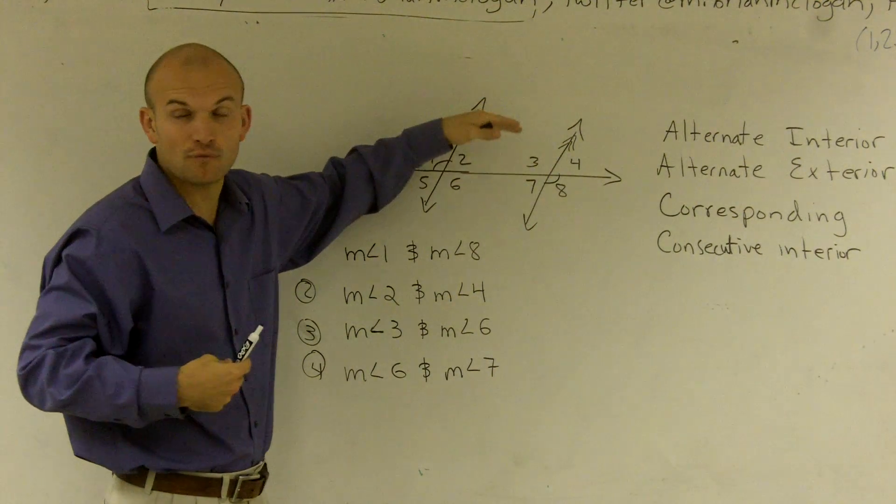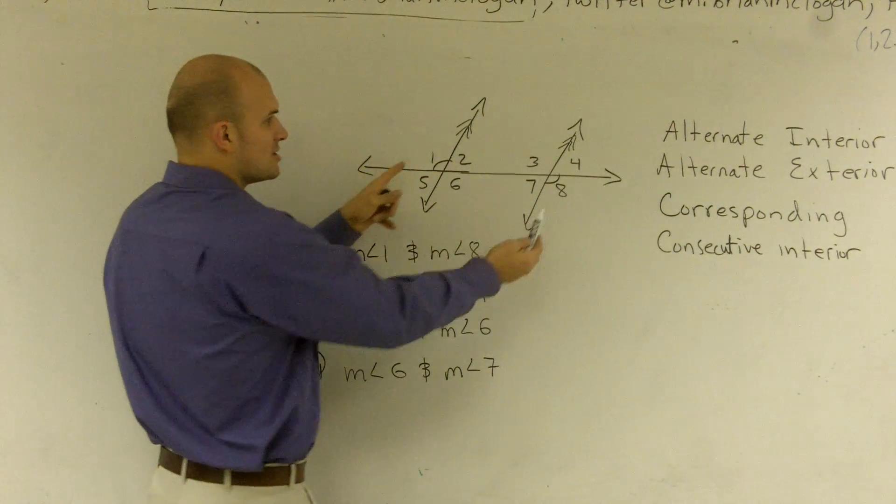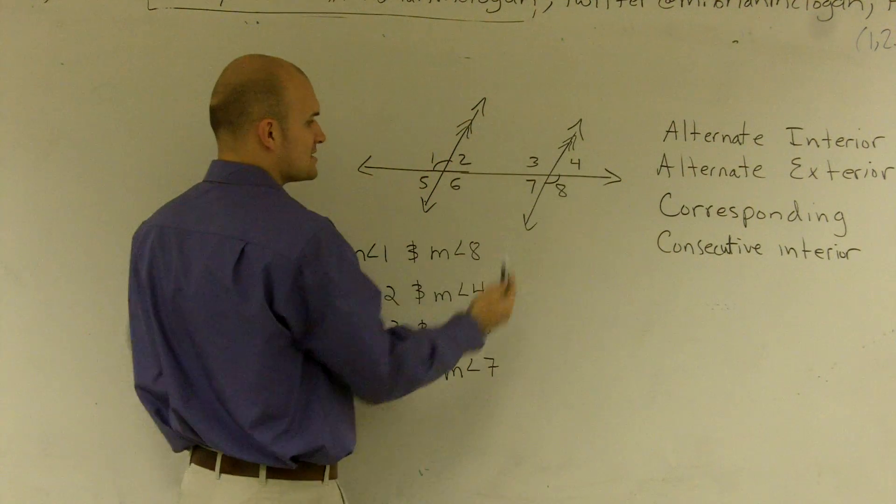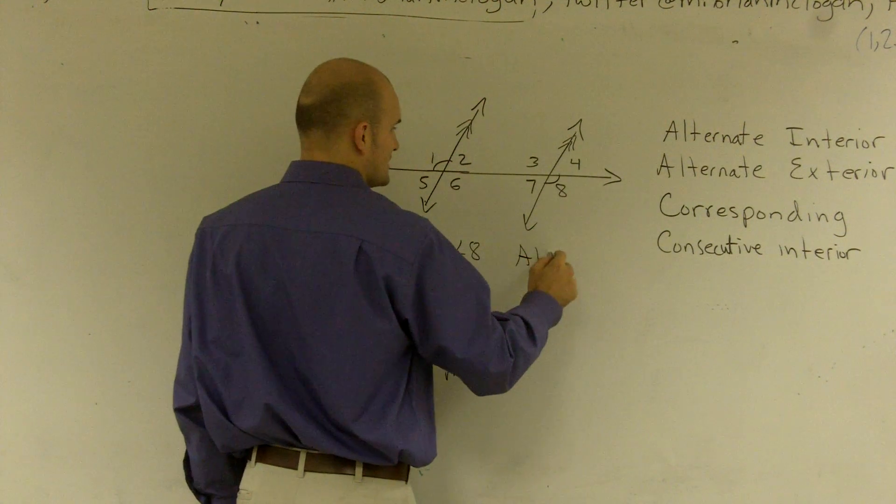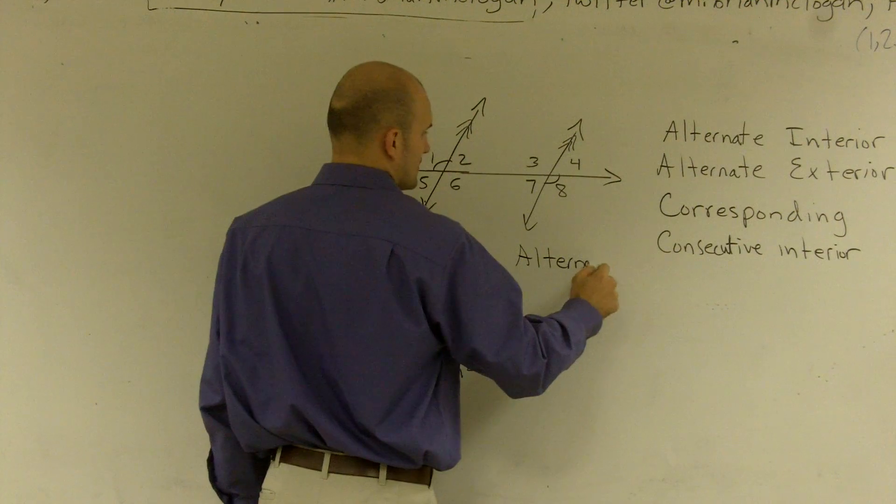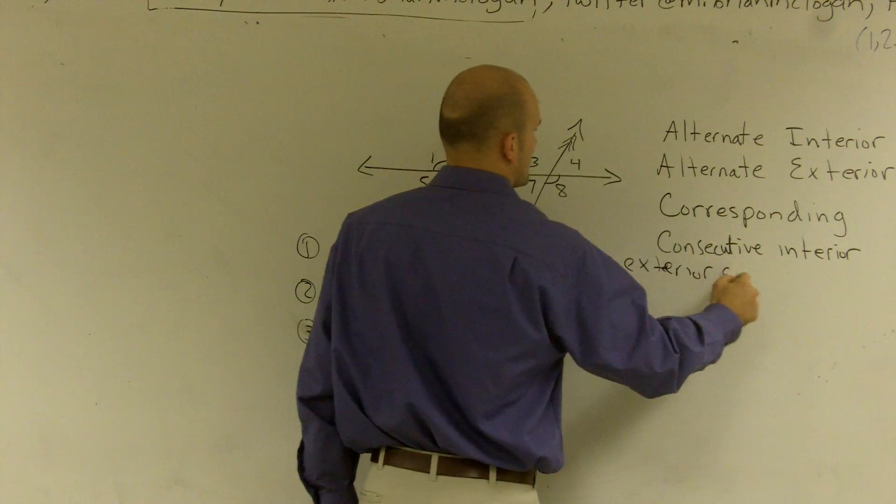So it's alternating with one's above the transversal, one's below. That's the alternating part. And since they're both outside of the parallel lines, we're going to call them exterior angles. So this one is what we call alternate exterior angles.